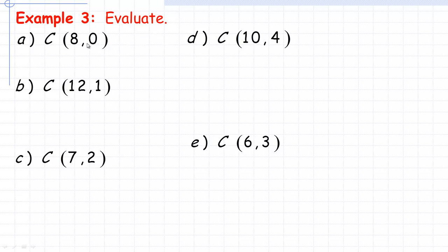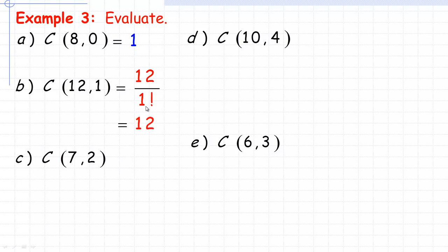Example 3: 8 choose 0 means we have 8 objects and we're selecting none of them — there's only one way to do that. Any number choose 0 is always equal to 1. For B, 12 choose 1: the group size is 1, so there's only one number on top, which is 12, divided by 1 factorial. That's just 12 divided by 1, which equals 12. This leads us to the rule that N choose 1 equals N. For example, 100 choose 1 would be 100.